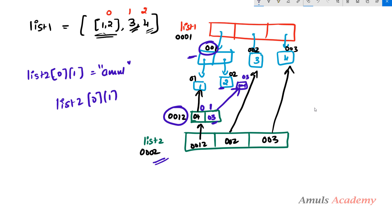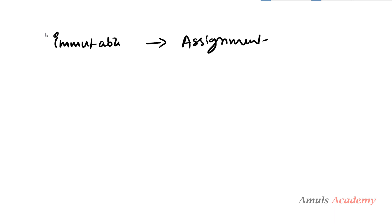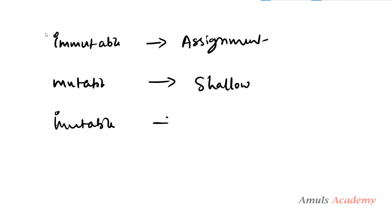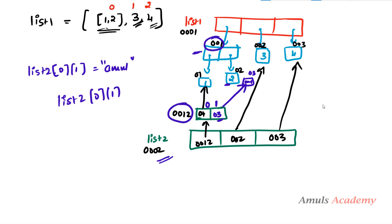For immutable objects there is usually no need to copy since they cannot change, but if you want you can use the assignment operator. For simple mutable lists without nesting we can use shallow copy. For compound mutable objects like nested lists we use deep copy. We don't usually need to copy immutable objects, but if the variable name pointing to an immutable object might be reassigned and we want to preserve the original data, the assignment operator can help. So that covers the assignment operator, shallow copy, and deep copy in detail.